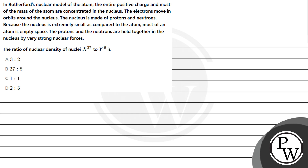Hello, let's read the question. In Rutherford's nuclear model of the atom, the entire positive charge and most of the mass of the atom are concentrated in the nucleus. The electrons move in orbits around the nucleus. The nucleus is made of protons and neutrons. Because the nucleus is extremely small as compared to the atom, most of the atom is empty space. The protons and neutrons are held together in the nucleus by very strong nuclear forces.